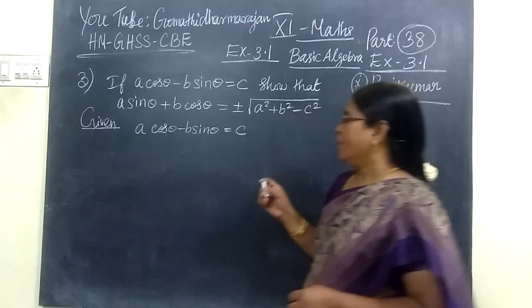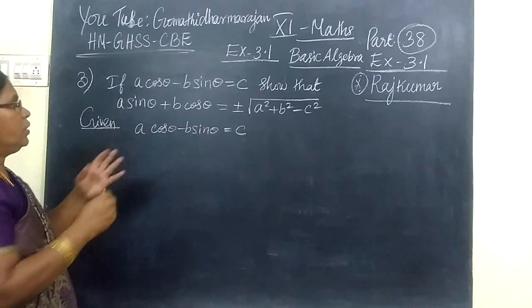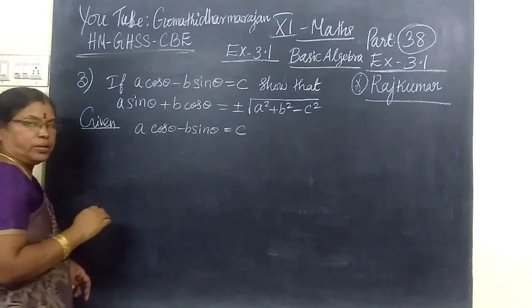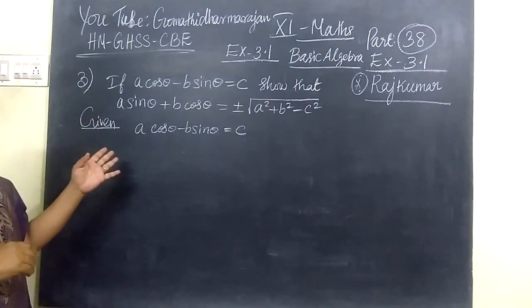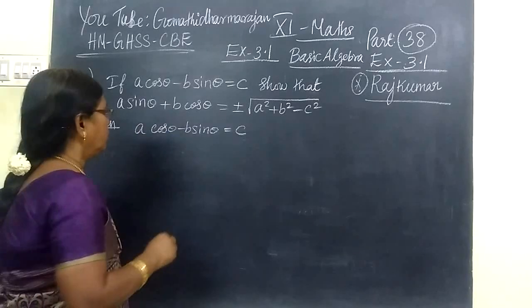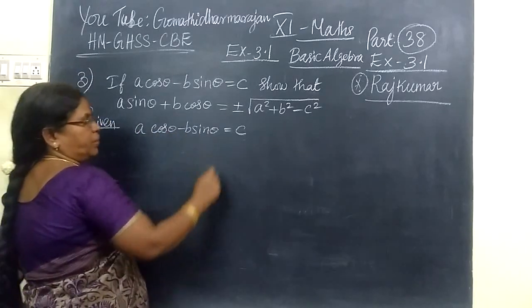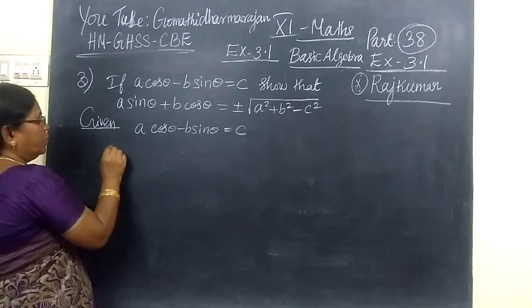If A cos theta minus B sin theta equals C, we are going to take this. Now given A cos theta minus B sin theta equals C, now squaring on both sides.